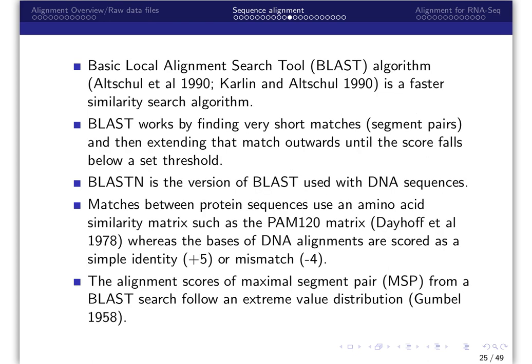The basic local alignment search tool, BLAST, is a faster similarity search algorithm. BLAST works by finding very short matches, sigma pairs, and then extending that match outwards until the score falls below a set threshold. Each matched pair of sequences above a certain length is then stored and reported as high scoring segment pairs, or HSPs, starting with those with the highest score.